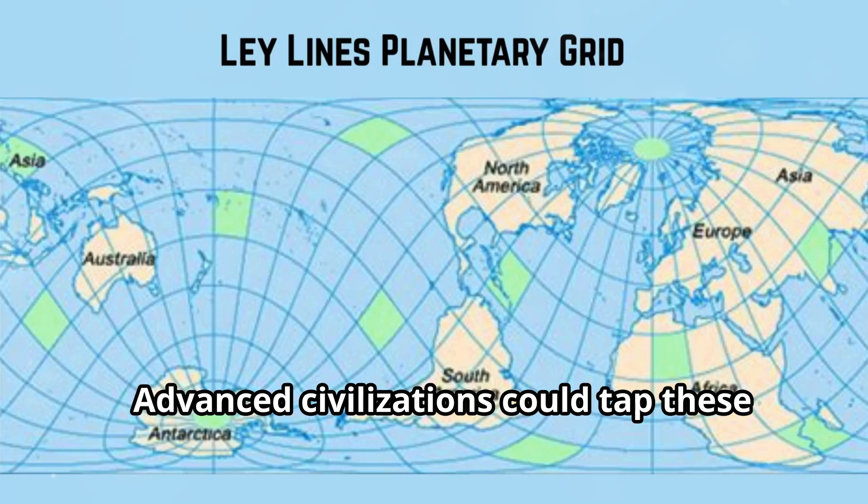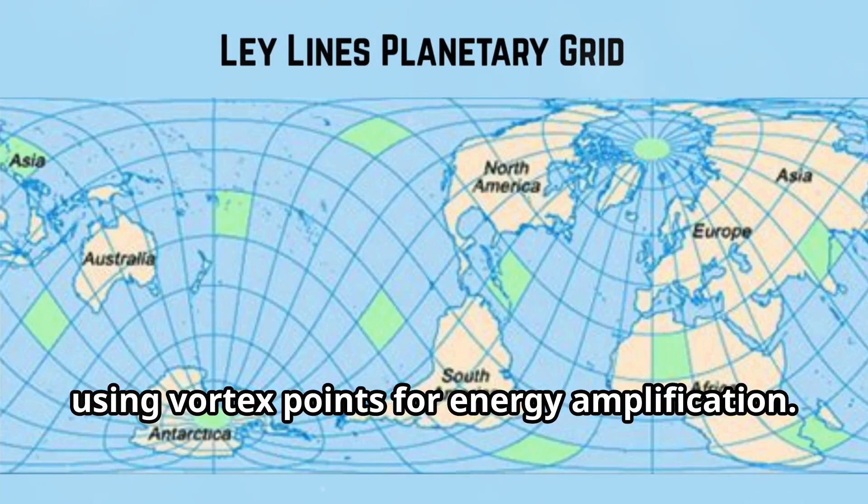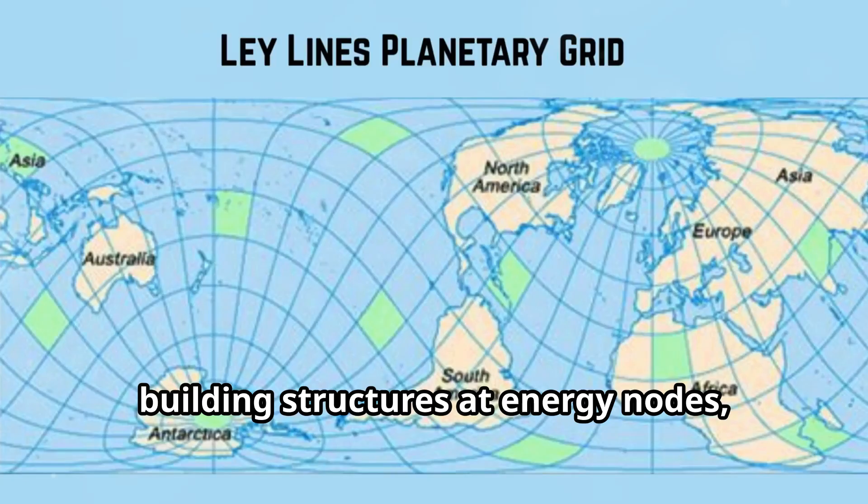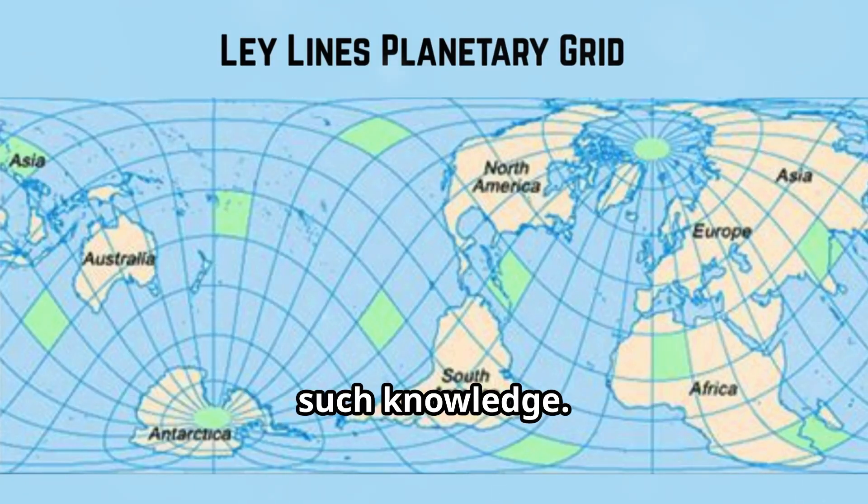Advanced civilizations could tap these grids to power planetary systems, using vortex points for energy amplification. This aligns with ancient practices of building structures at energy nodes, suggesting a futuristic rediscovery of such knowledge.